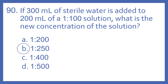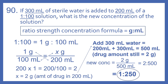And the answer is B, 1 to 250. Remember, the ratio strength concentration formula is grams to milliliters. So 1 to 100 means there is 1 gram to 100 milliliters. We need to find out how much is going to be in 200 milliliters of the 1 to 100 solution, so that's what we're going to do first.